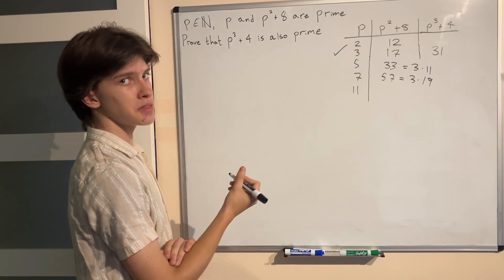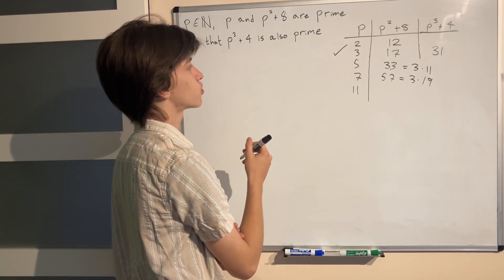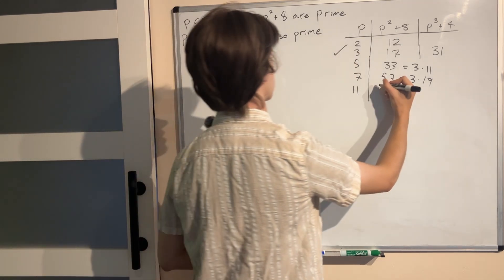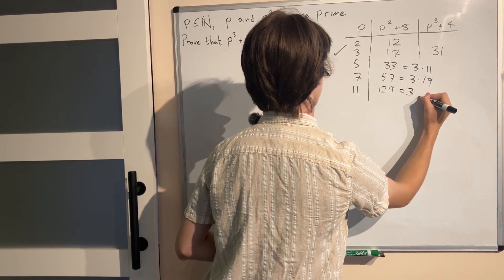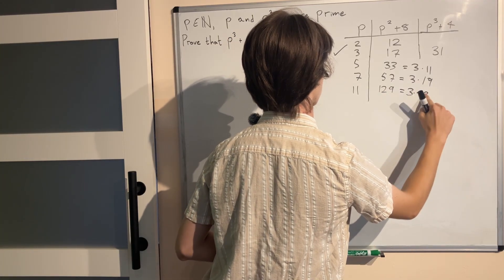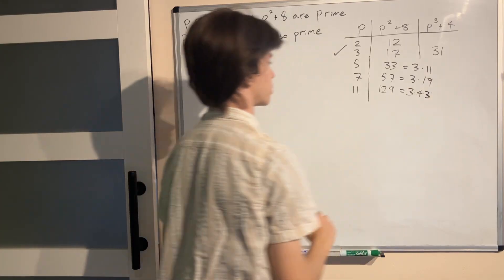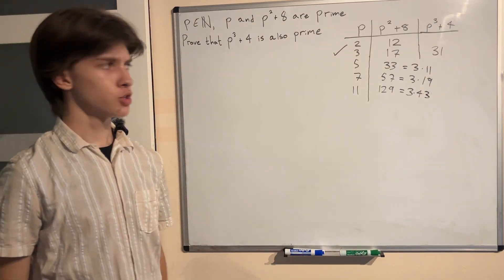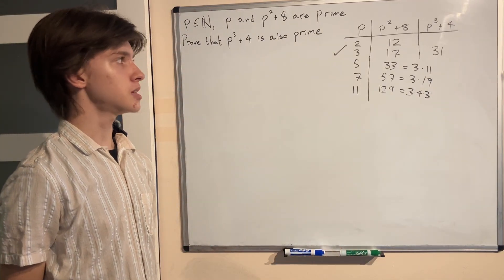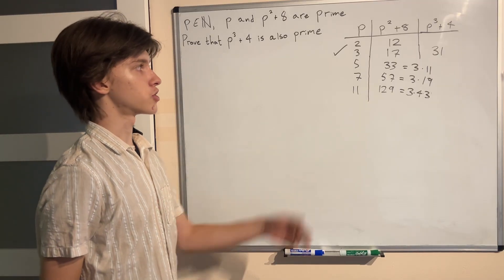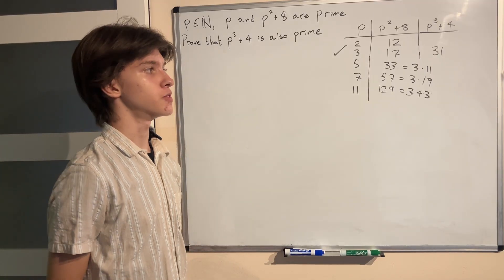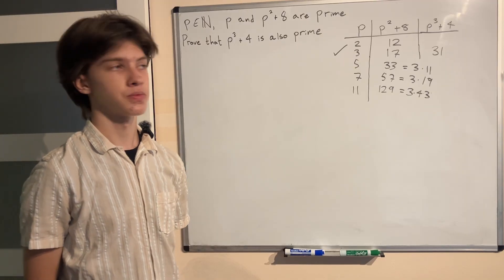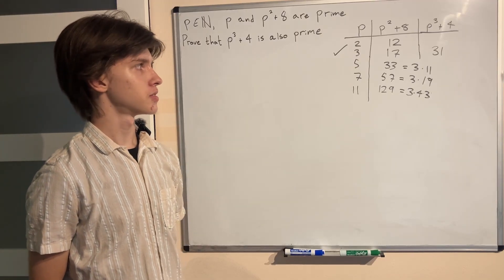Okay, now for 11 p² + 8 is 121 + 8 which is 129 and this is of course another factor factorable into 3 as such. So you might see some pattern here. It seems that for all primes greater than 3, p² + 8 is always going to be divisible by 3 which is quite strange.